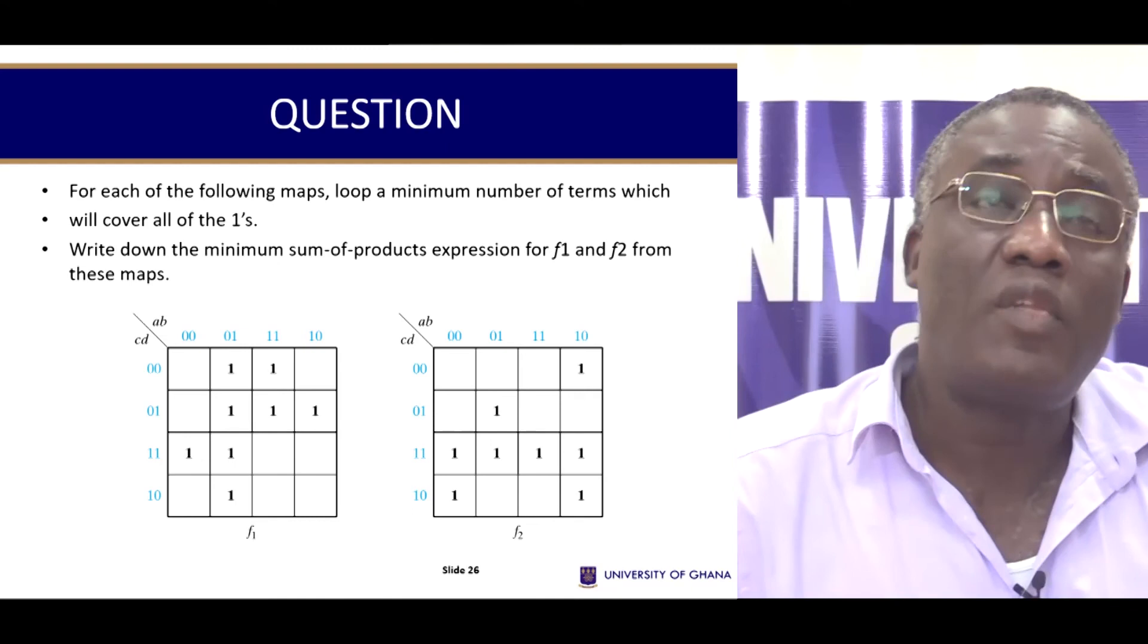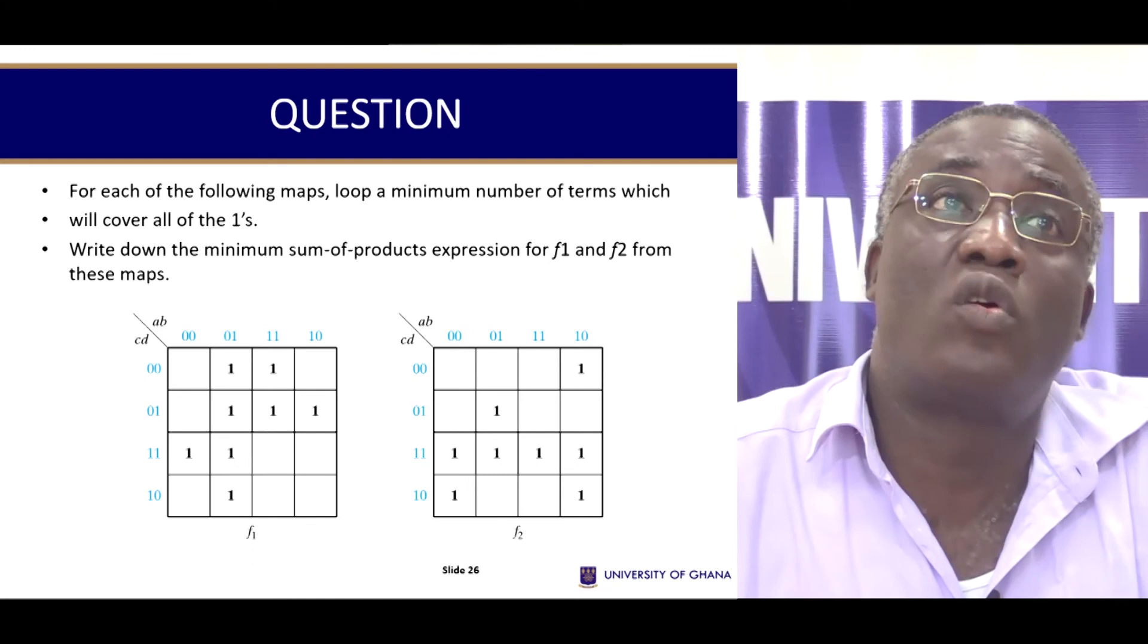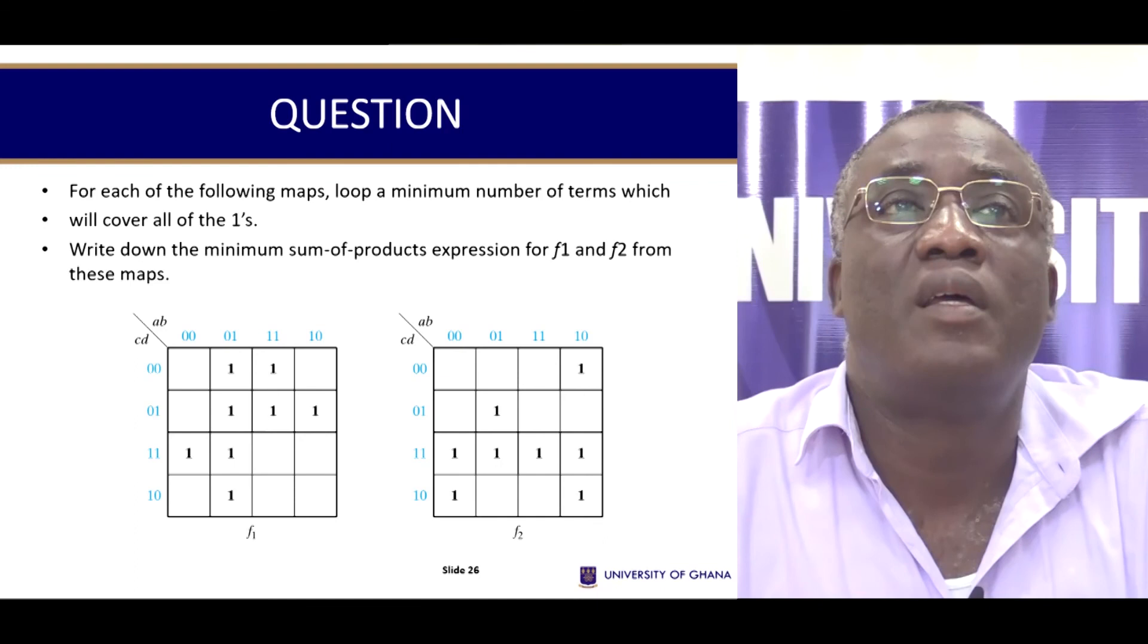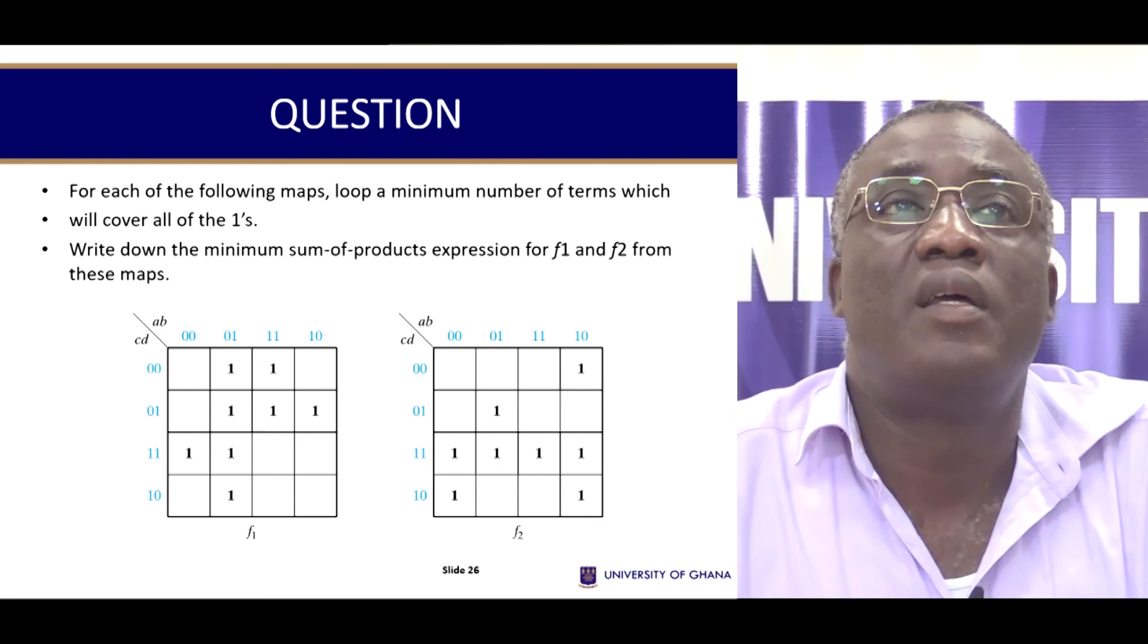So this is a question for you to consider. For each of the following maps, find a loop with a minimum number of terms which will cover all the ones, and then write down the minimum sum of products for function 1 and function 2. So that brings us to the end of this session. Thank you.